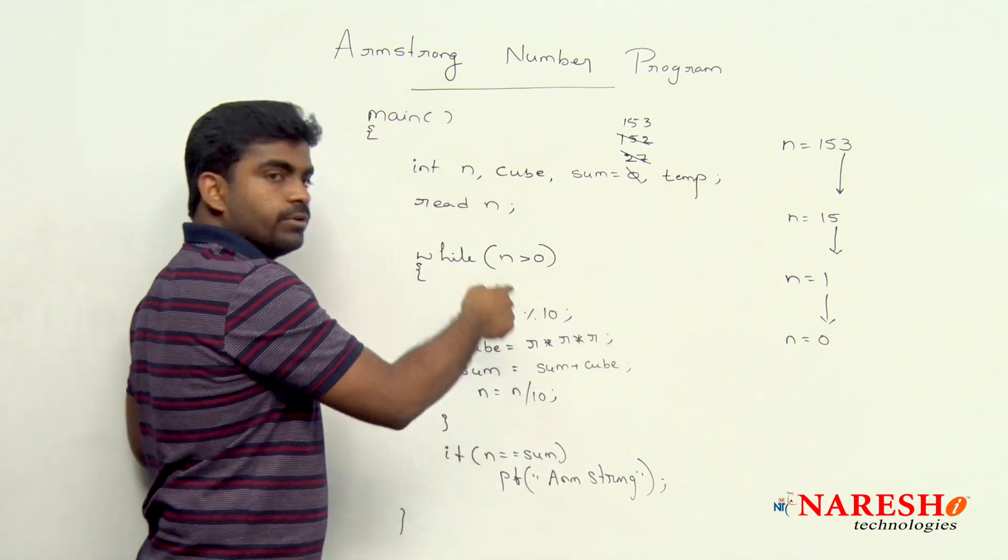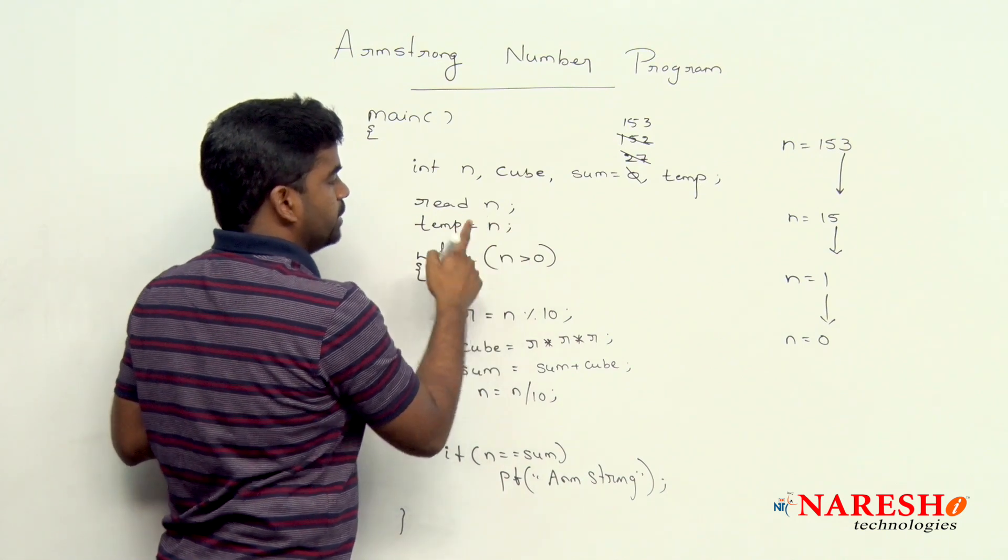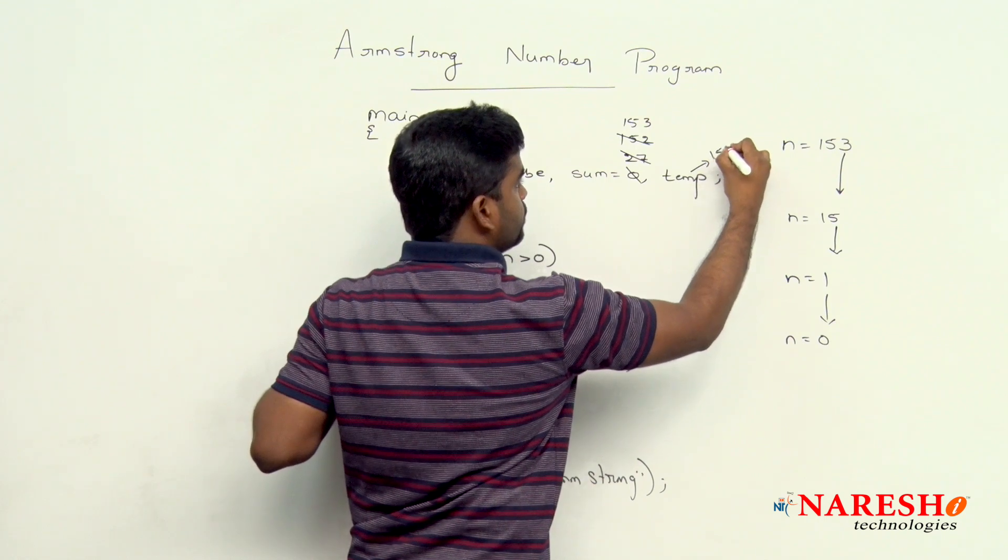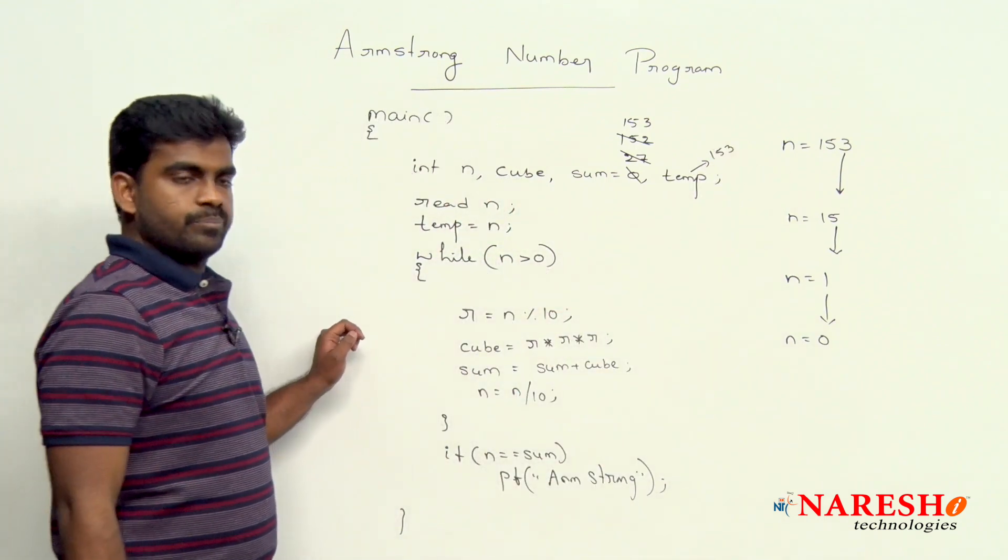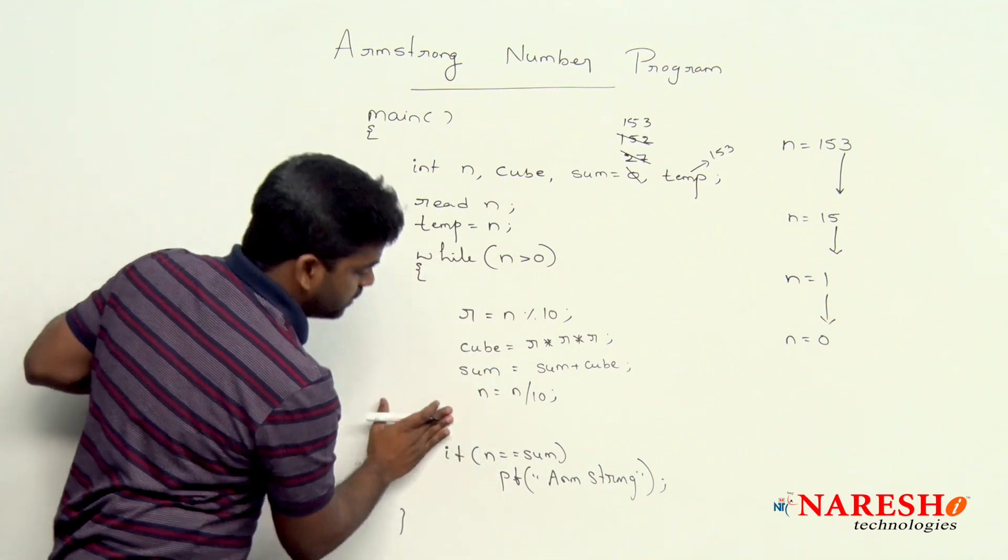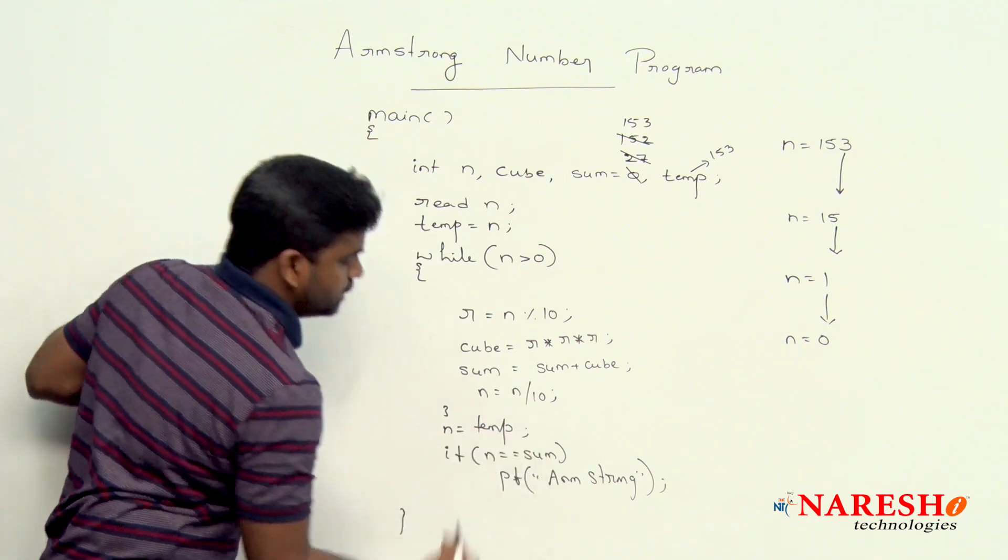Before going to perform this operation, into temp I am storing that n value initially. What is that n value? 153. Temp value is 153 initially. Once your logic is done, before going to check n, we are recollecting the temp value.